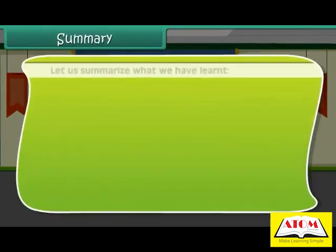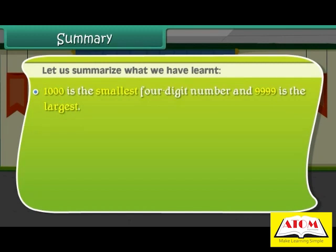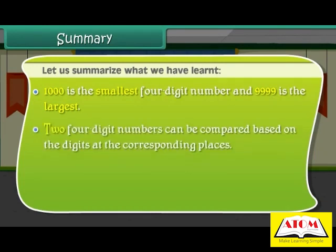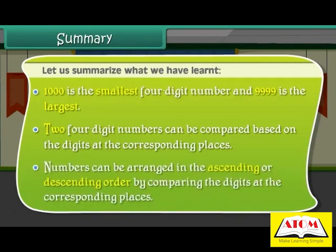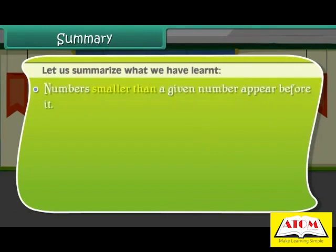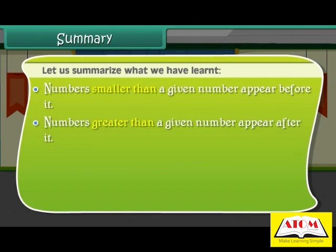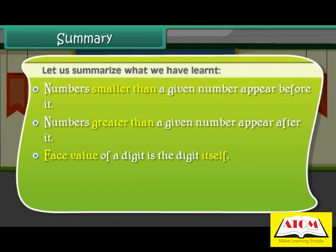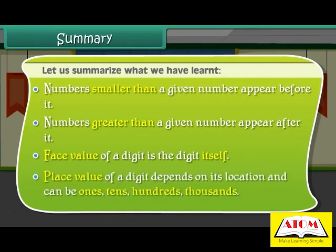Summary. Let us summarize what we have learned. 1,000 is the smallest four-digit number and 9,999 is the largest. Two four-digit numbers can be compared based on the digits at the corresponding places. Numbers can be arranged in ascending or descending order by comparing digits at corresponding places. Numbers smaller than a given number appear before it, and numbers greater than it appear after it. Face value of a digit is the digit itself, while place value depends on its location and can be ones, tens, hundreds, and thousands.